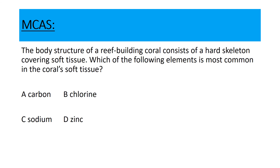The body structure of a reef-building coral consists of a hard skeleton covering soft tissue. Which of the following elements is most common in the coral's soft tissue? Again, we're talking about the elements that a living thing is made out of: carbon and hydrogen, nitrogen and oxygen, phosphorus and sulfur. So the answer is A, carbon.